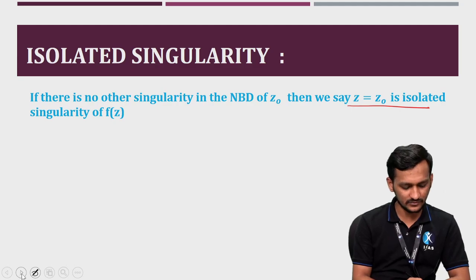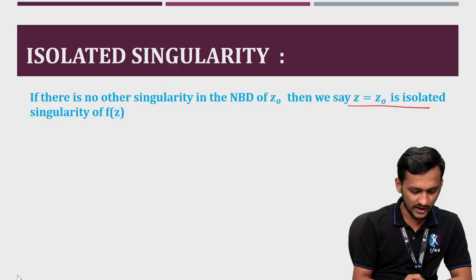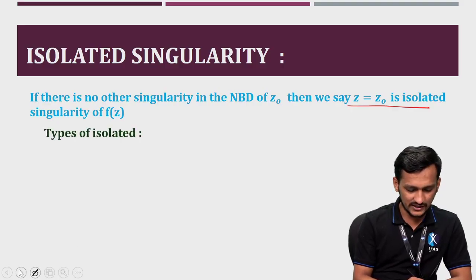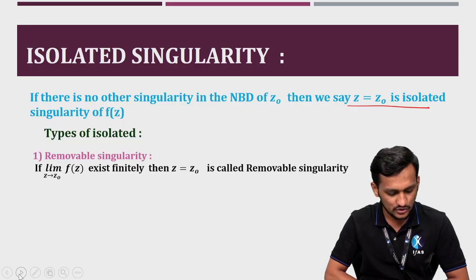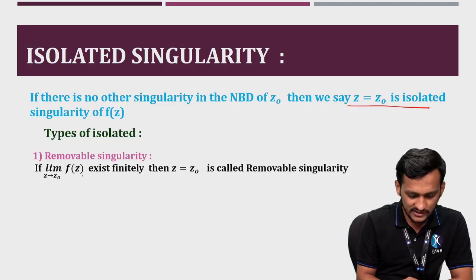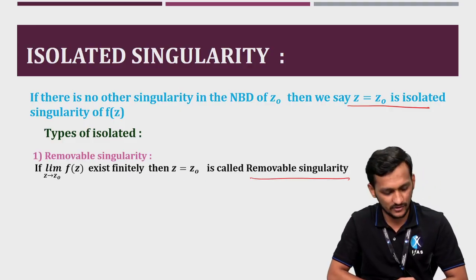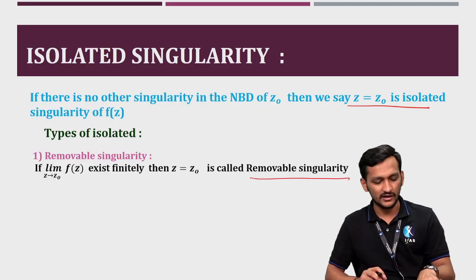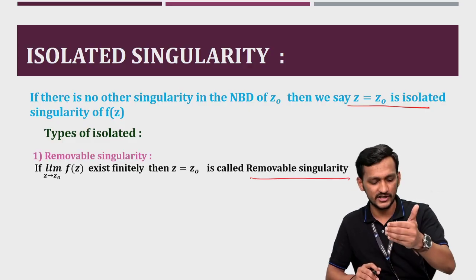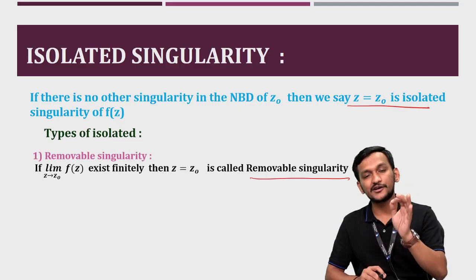Now let's talk about the sub-classification of singularities individually, isolated as well as non-isolated. The first type of isolated singularity is removable singularity. If limit z tends to z₀ of f(z) exists finitely, then z₀ is called a removable singularity. Simply find the limit of f(z) as z approaches z₀. If it exists finitely, then we say z₀ is removable.